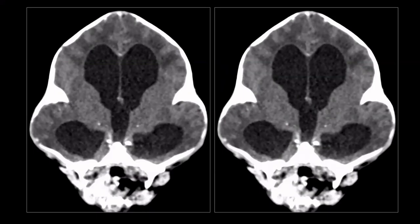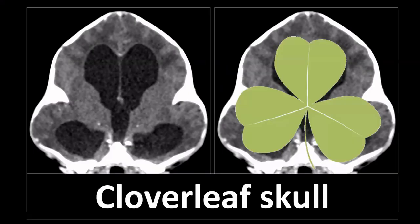This patient has craniosynostosis — a condition in which sutures have prematurely closed, leading to an abnormal skull morphology. In this case, the skull looks like a clover leaf, which is why we call this the cloverleaf skull. Practically all sutures have fused in this child.